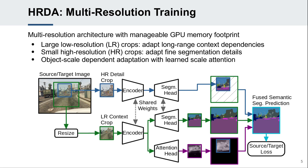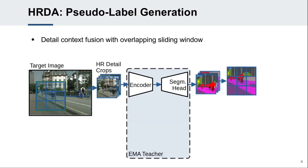In that way, HRDA preserves the main advantages of a large crop size and high-resolution training while maintaining a much lower GPU memory consumption than full image high-resolution training. For pseudolabel generation, the detail predictions are generated for the entire area of the context crop using overlapping sliding windows. In that way, multiple views with different contexts are combined for robustness.